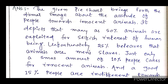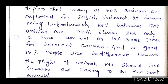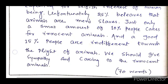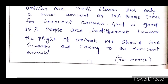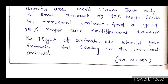The given pie chart brings forth the dismal — meaning very poor and derogatory — image about the attitude of people towards innocent animals. It depicts that as many as 50% of animals are exploited for the selfish interest of human beings. Unfortunately, 25% believe that animals are men's slaves. Just only a small amount of 10% people care for innocent animals, and a good 15% people are indifferent towards the plight of animals. We should give sympathy and care to innocent animals.